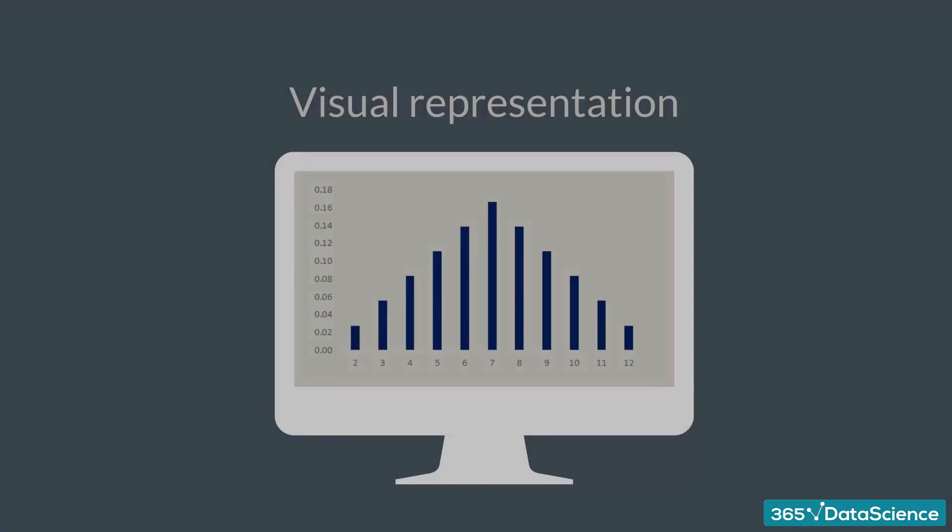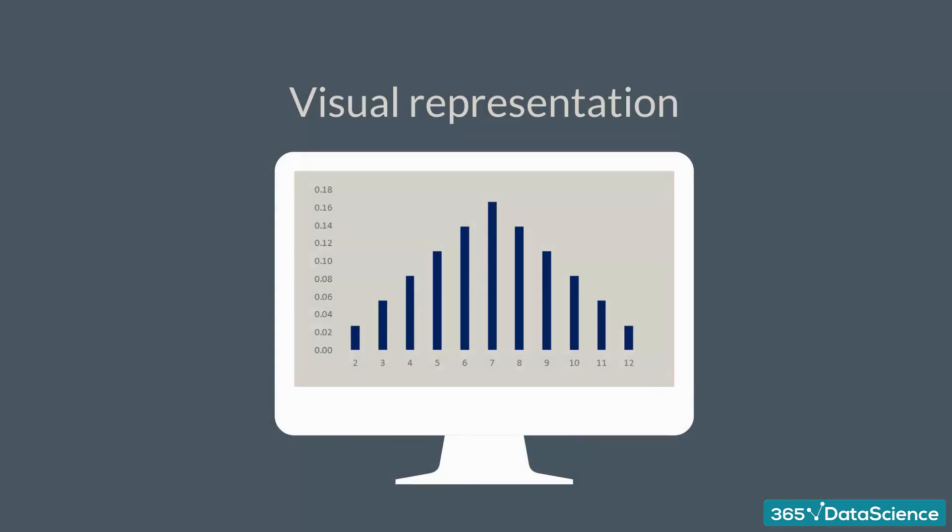Let's see the graph associated with it. Alright, so looking at it, we understand that when we roll two dice, the probability of getting a 7 is the highest. We can also compare different outcomes such as the probability of getting a 10 and the probability of getting a 5. It is evident that it is less likely that we will get a 10.